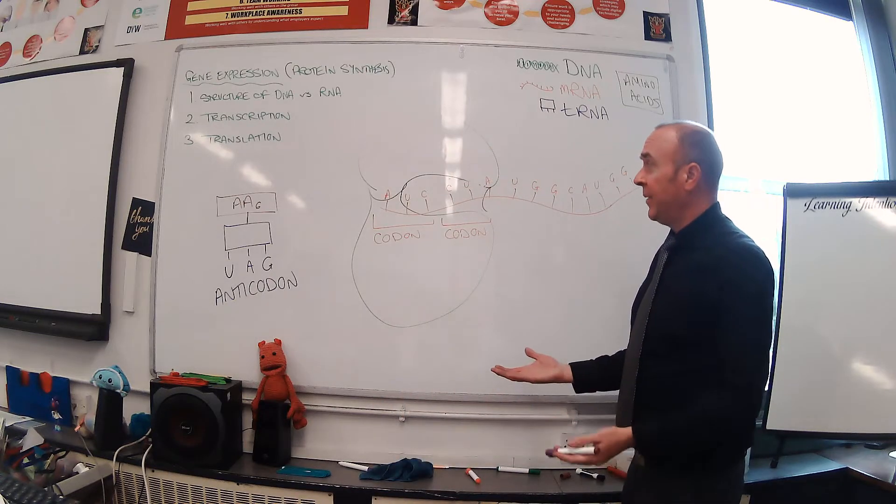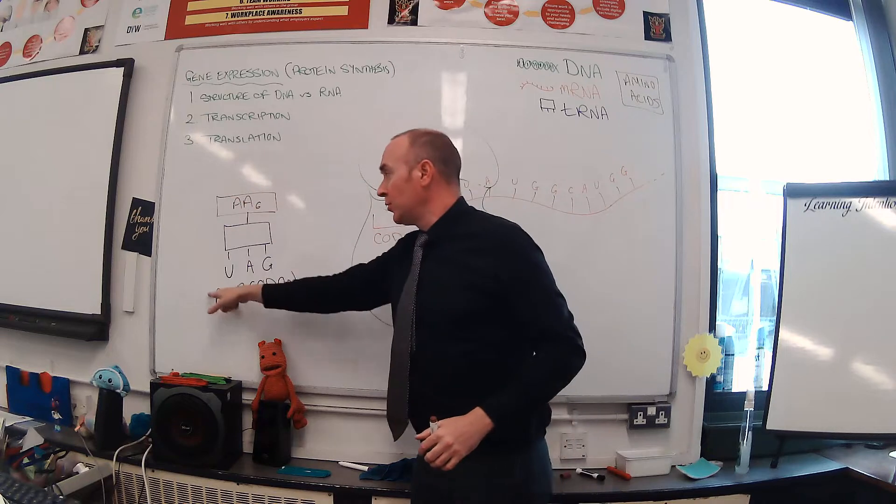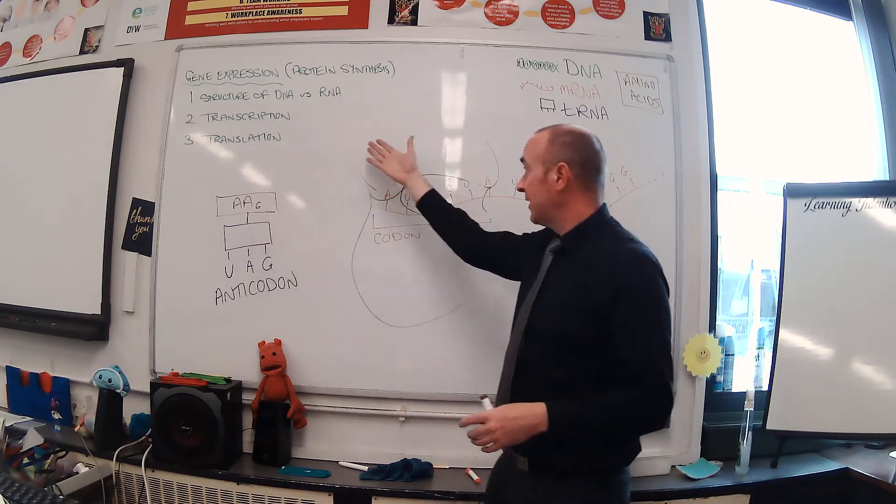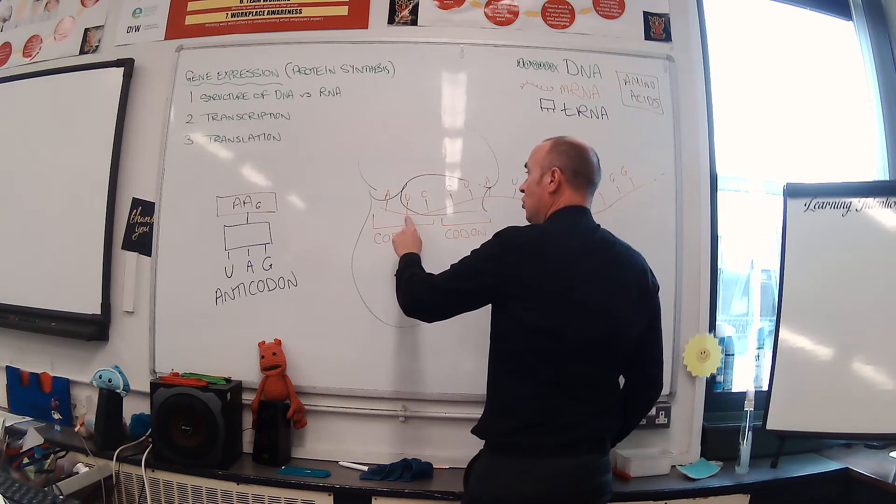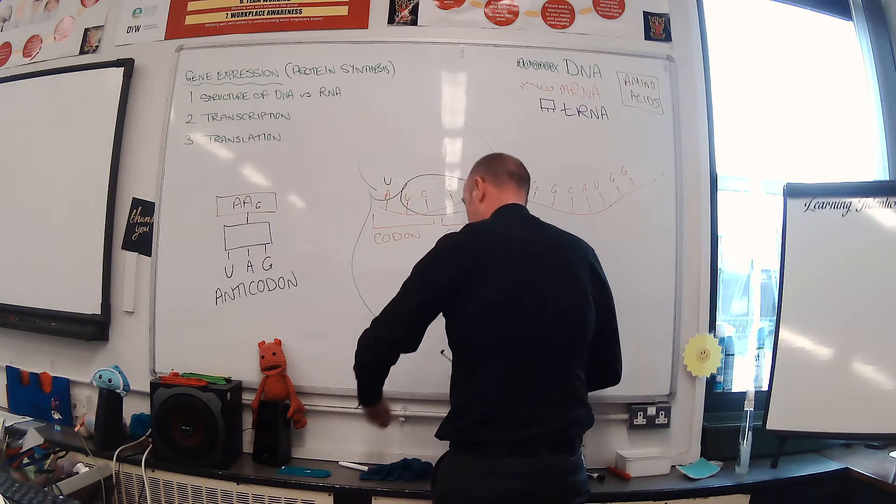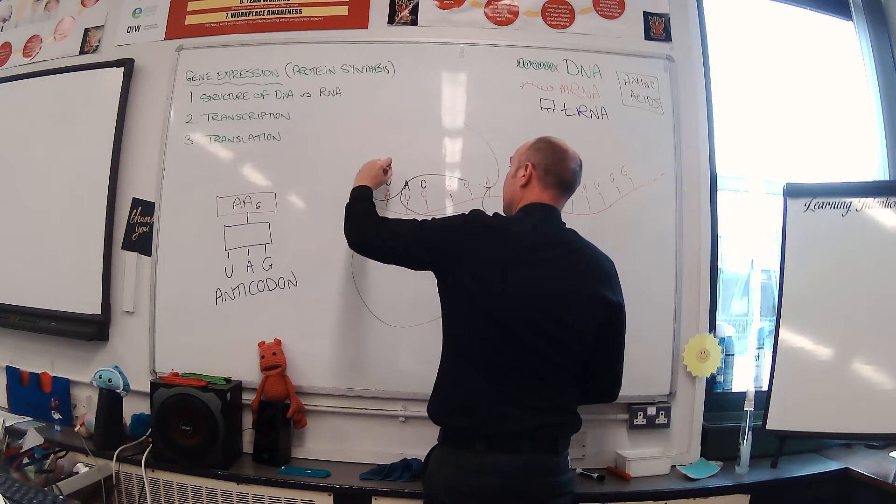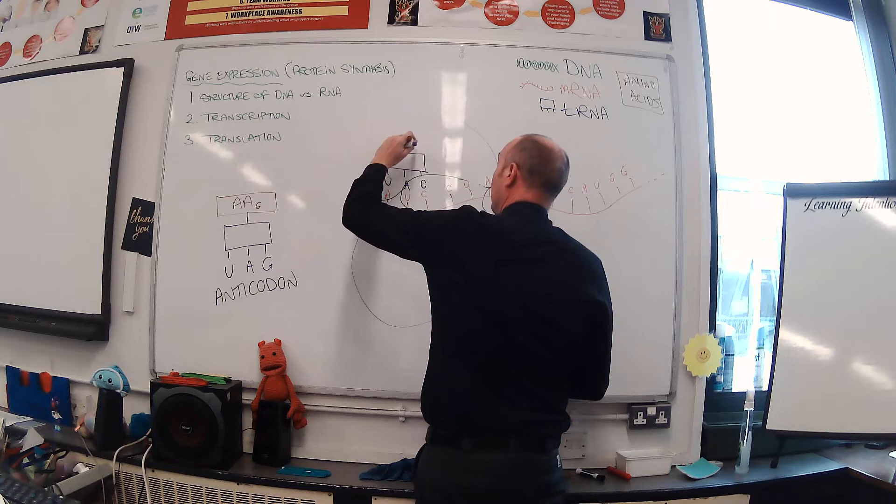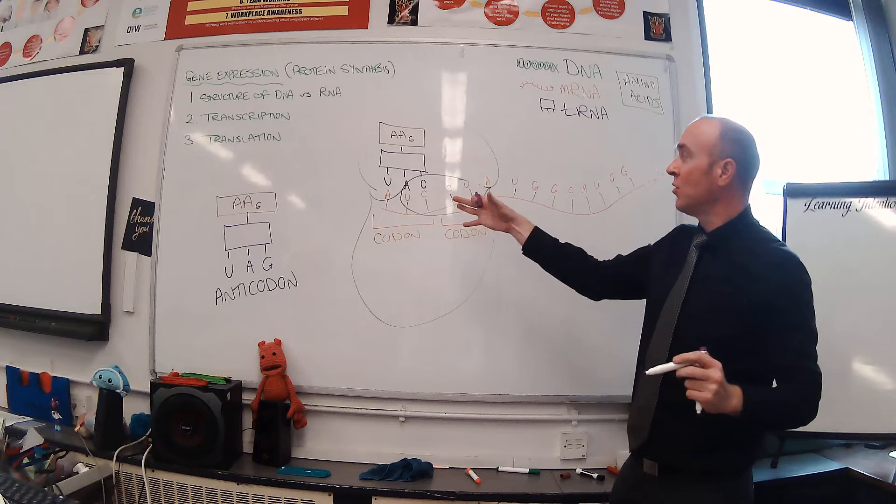These tRNA molecules are floating freely around the cytoplasm and are then attracted over to codons that they match. So with AUC here, UAG would be attracted over and it would bind on.